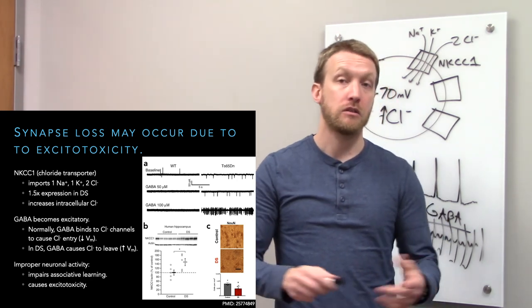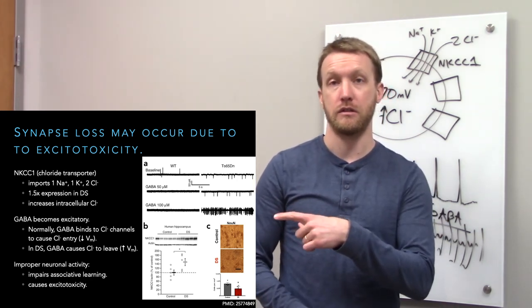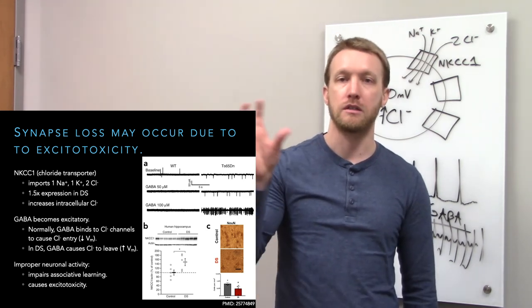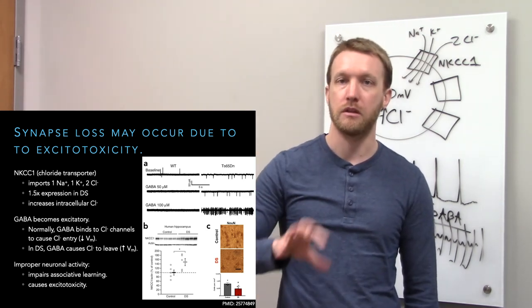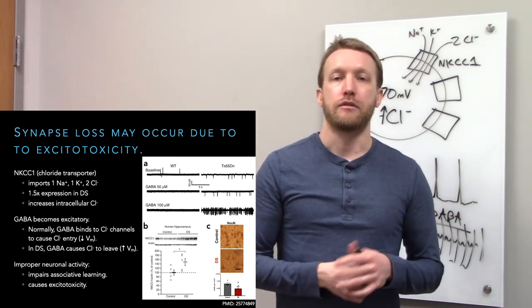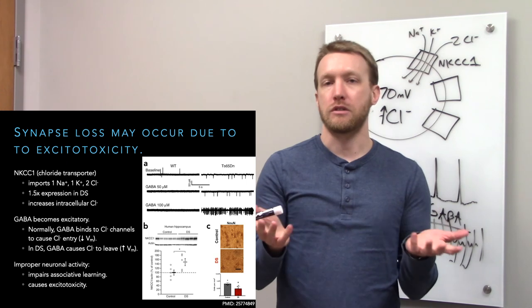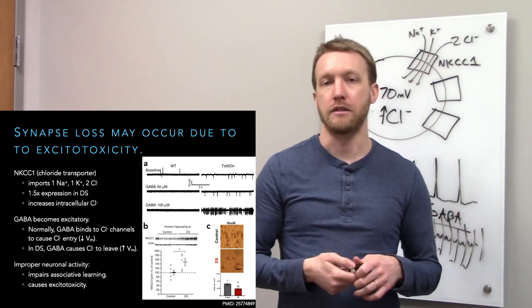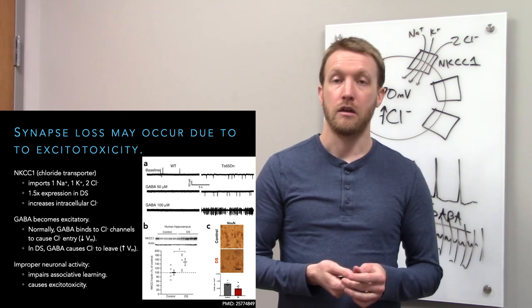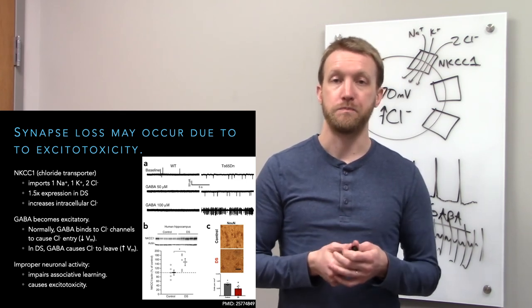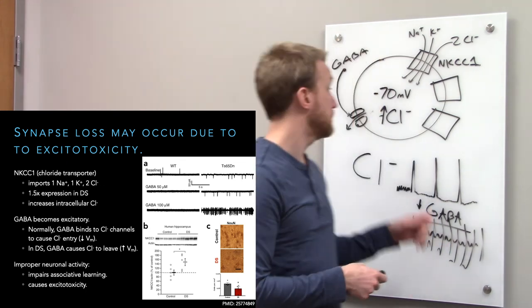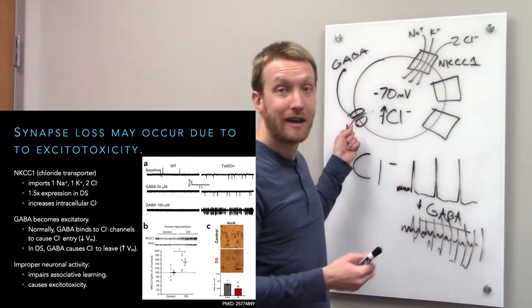That could explain the epilepsy. It also explains the loss of neurons that we see. These are back to human beings. Control on top, people with Down syndrome on the bottom. NuN is just this nuclear protein in neurons. The brown blobs are neurons. You see a reduction in neurons in postmortem samples from people with Down syndrome. That could be because of excitotoxicity. How can I silence a neuron? I can't.